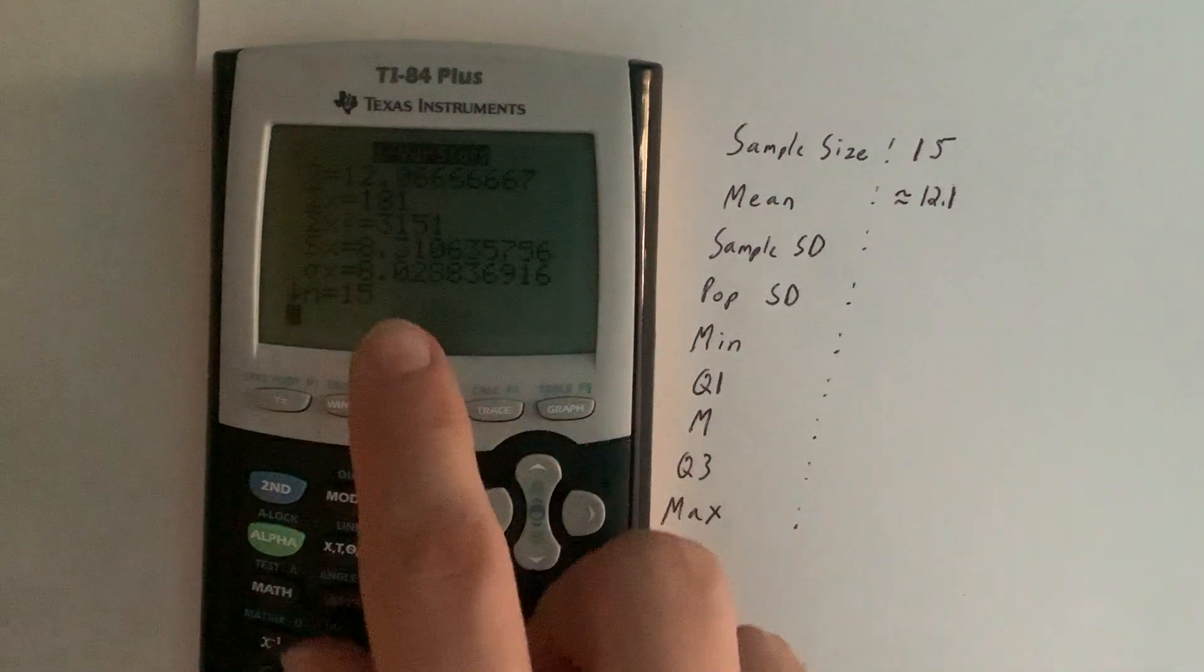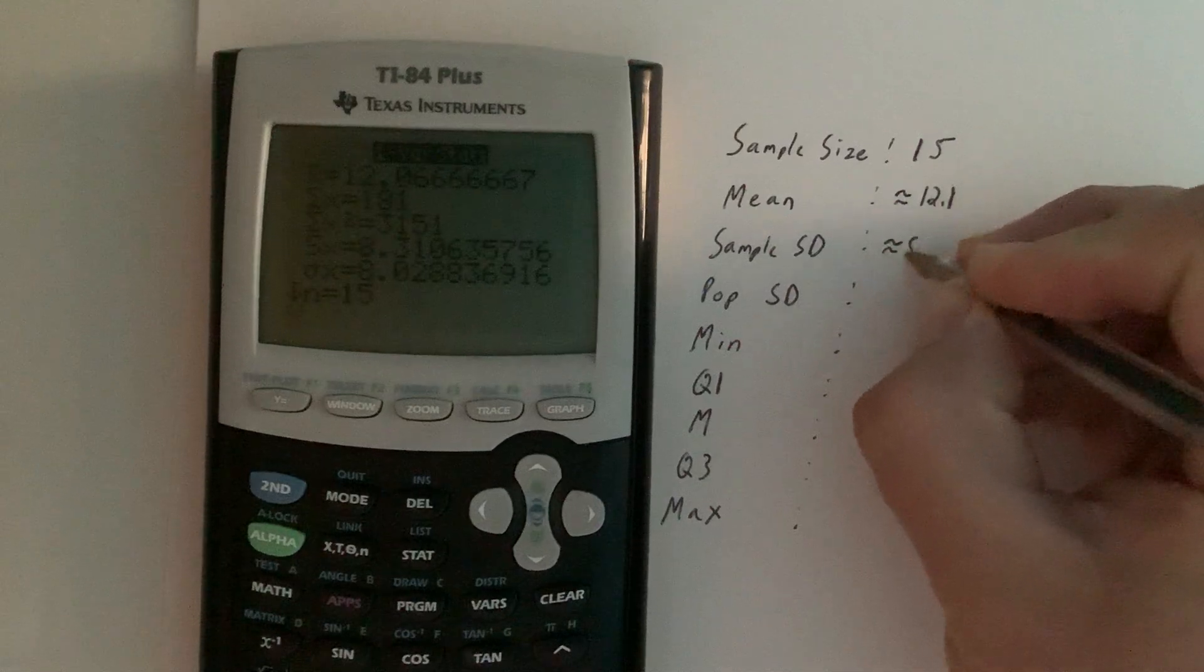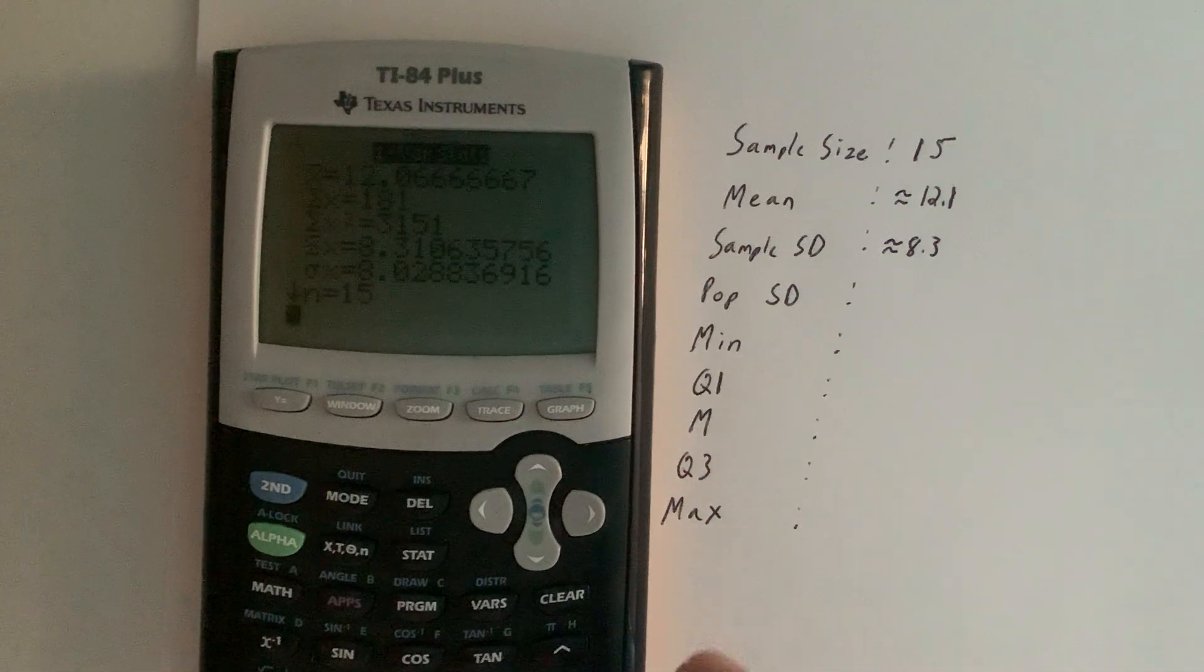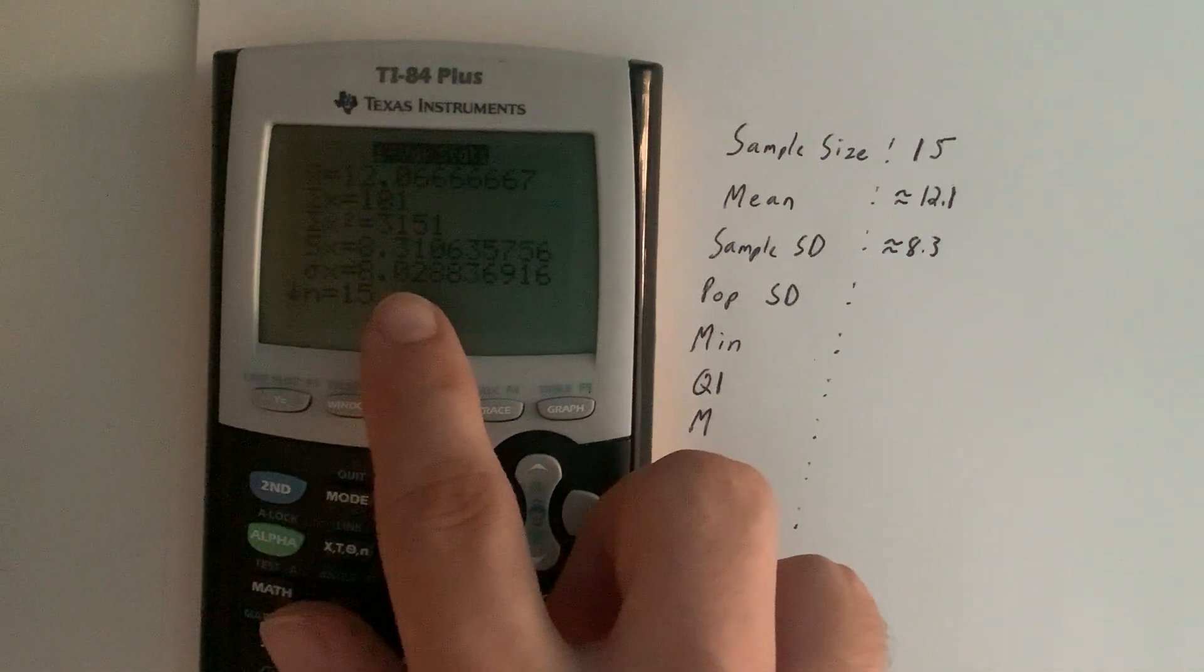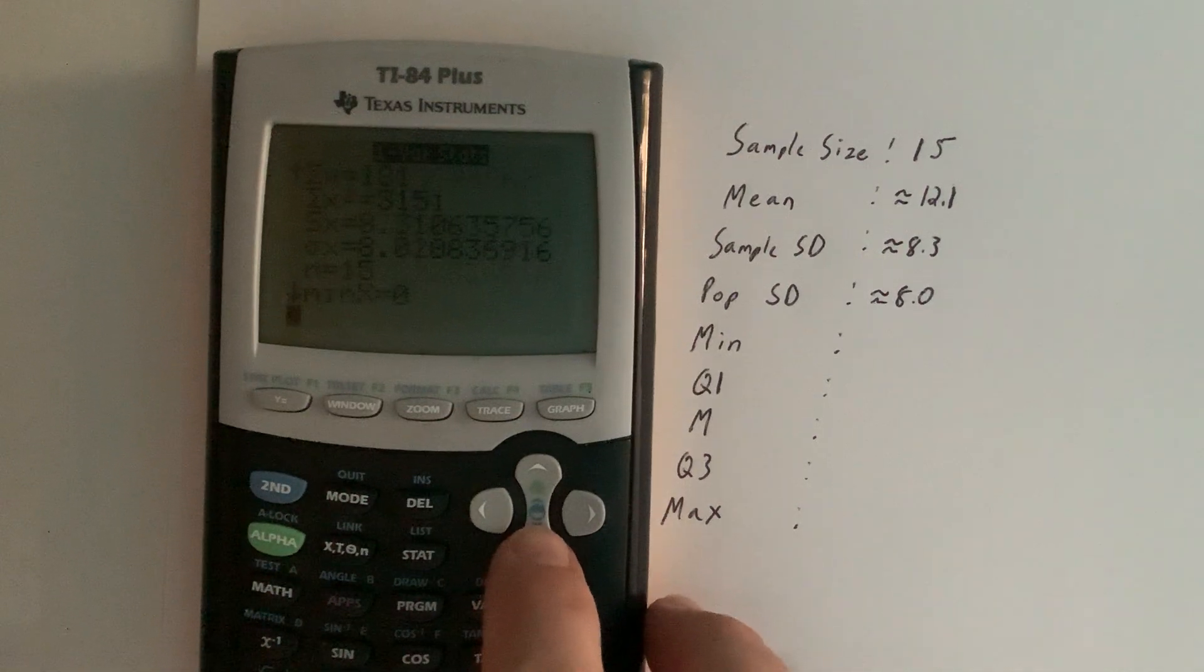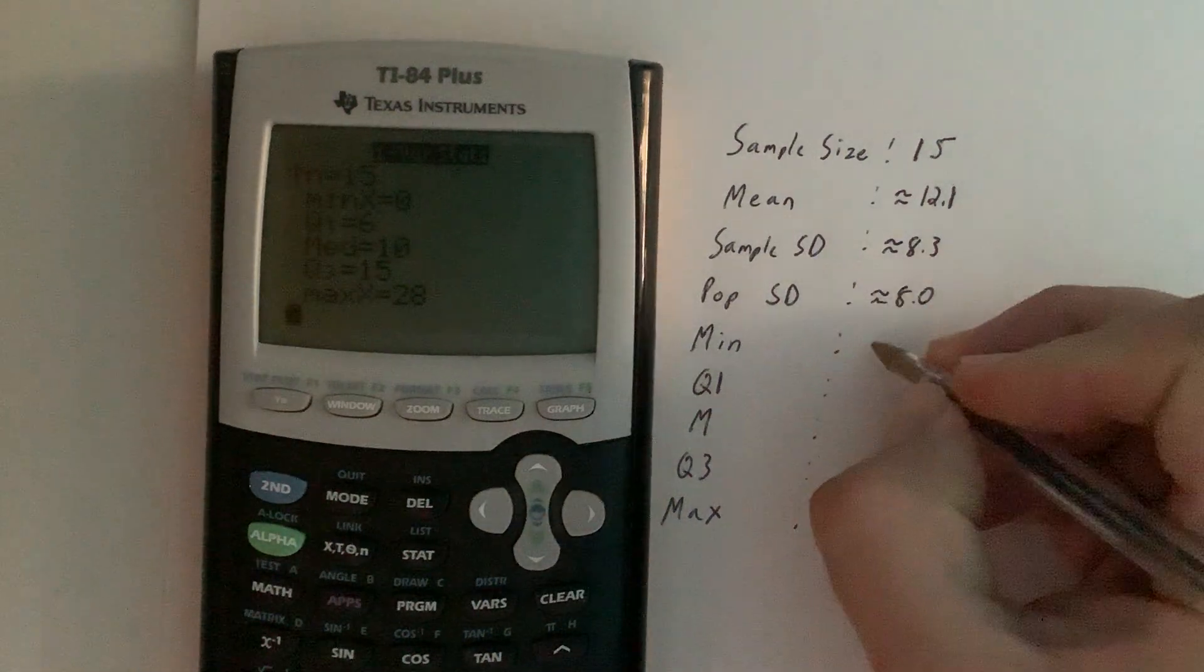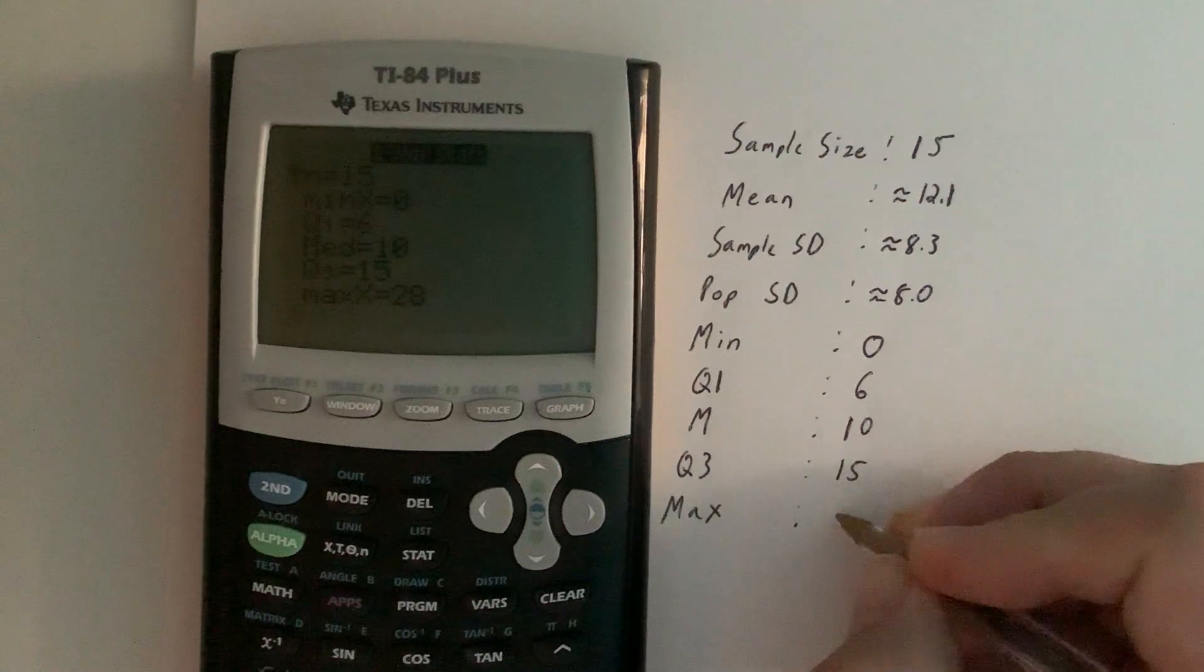Most of the time in our class, sample standard deviation is the standard deviation we want, but sometimes we will want population standard deviation. Population standard deviation is always a bit smaller, and there it is right there, 8.02. Then we want the minimum, Q1, the median, Q3, and the maximum—those are what we call the five-number summary. They're not initially displayed, but if you use your down arrow key and move down, you can see all five. The minimum was 0, Q1 was 6, the median was 10, Q3 was 15, and the maximum was 28.